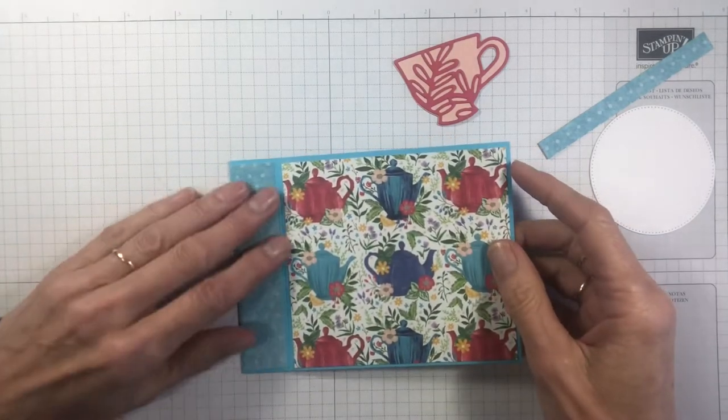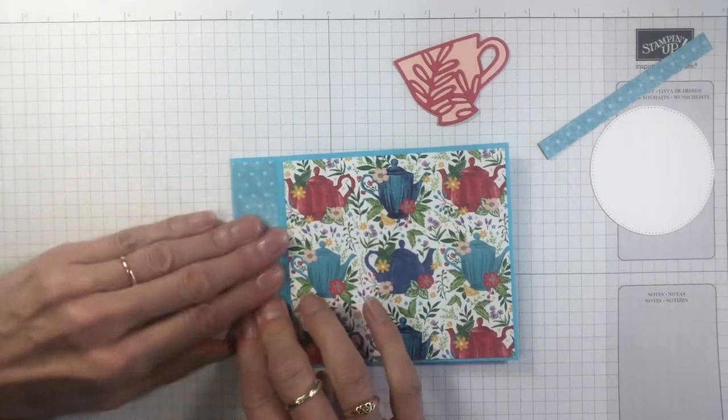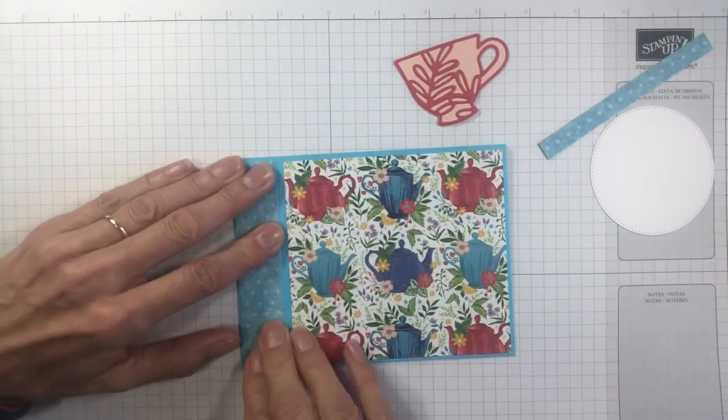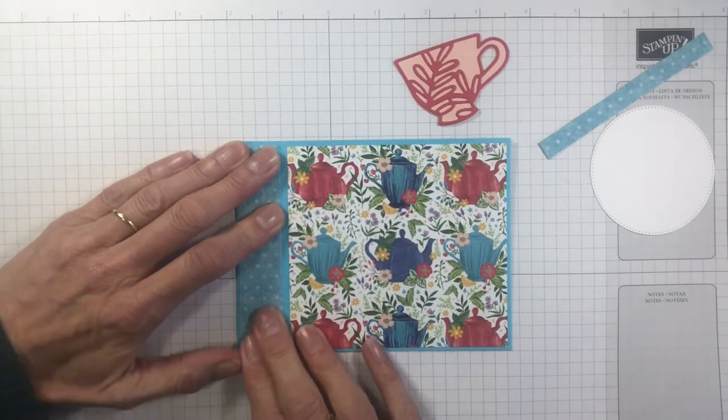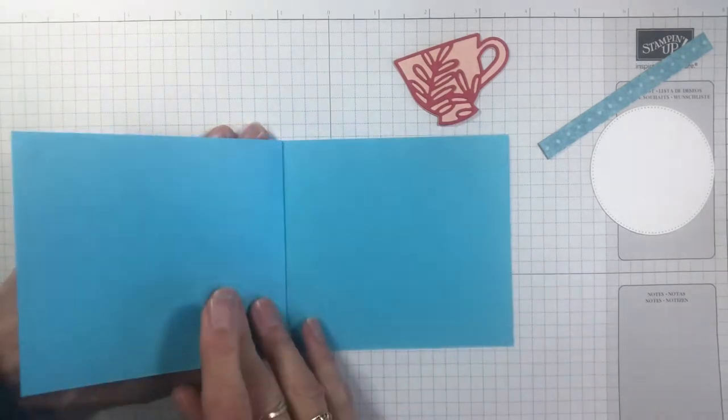So fold that over and just press that down to seal. As I've mentioned, if you're using the multi-purpose adhesive, you're going to have to hold that a little bit longer. And then you can see how you've got that little spine happening.